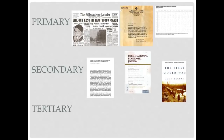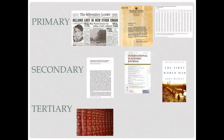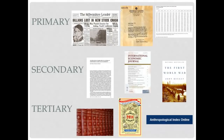Tertiary sources are collections of primary and secondary sources. They can be overviews or summaries of topics, as well as indexes or directories of sources. Examples include encyclopedias and dictionaries, almanacs, or print and online indexes.